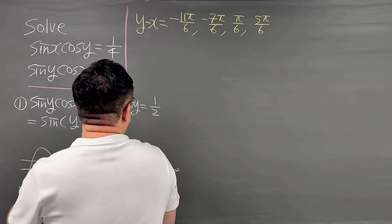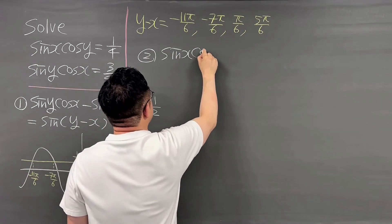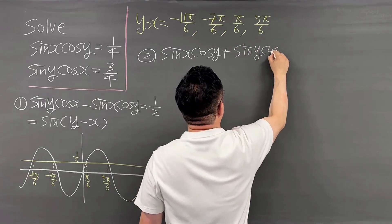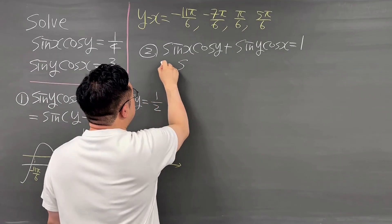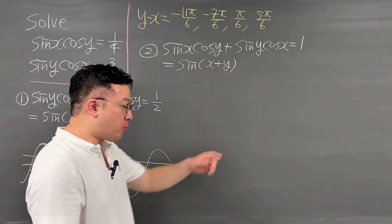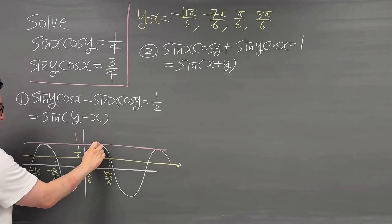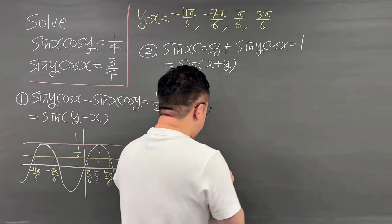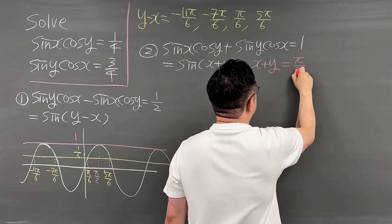Now let's talk about the sum formula — adding the two equations. Sine x cosine y plus sine y cosine x equals 1. This is the sum formula, so the left-hand side is the same as sine of (x plus y). If you put 1 on the sine graph, it hits the maximum point, so x plus y equals pi over 2 — just one specific value.